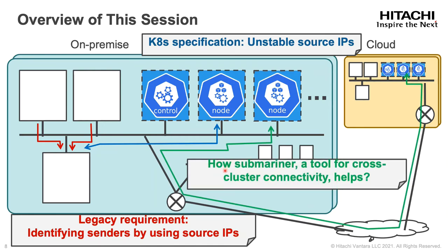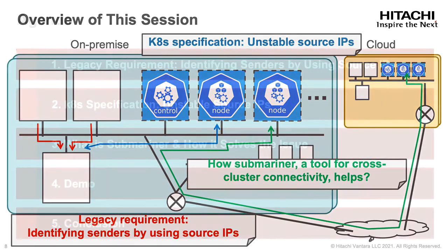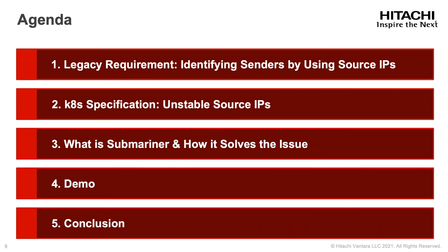As one of the solutions, I will show you how Submariner, a tool for cross-cluster connectivity, helps to solve this issue. I will first explain the legacy requirement of identifying senders by using source IPs, then explain the Kubernetes specification of unstable source IPs. After that, I will show what Submariner is and how it solves the issue, then show a demo and finally conclude.